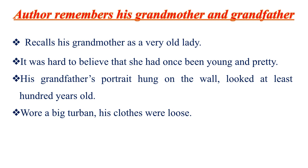In the beginning of the chapter, the author remembers his grandmother. He recalls her as a very old lady — for the 20 years that he had known her, he had found her old and wrinkled. It was hard for him to believe she had once been young and pretty and had a husband. Khushwant Singh's grandfather's portrait hung on the wall of the drawing room. He wore a big turban, his clothes were loose, and he looked at least a hundred years old. Looking at his portrait, no one could imagine him in his youth — he looked as if he could only have lots and lots of grandchildren.